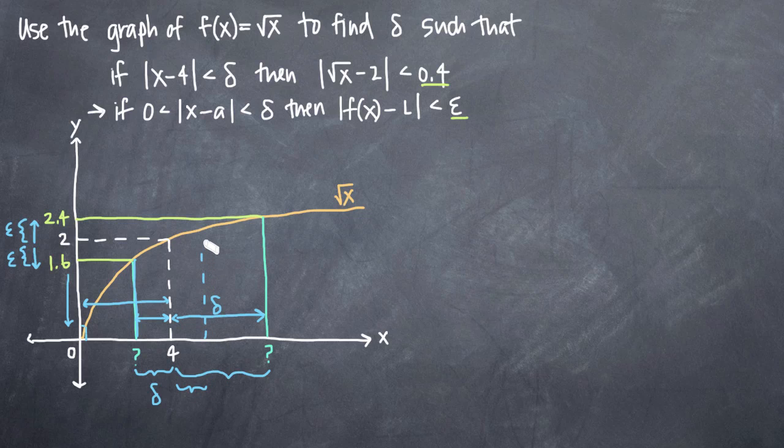And then the equivalent distance will say we can only move about this far to the right of 4, and we'll have to stay within this range here. That distance, that delta, will ensure that we stay within our epsilon range over here on the y-axis.